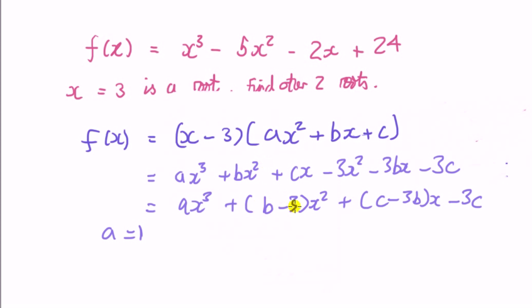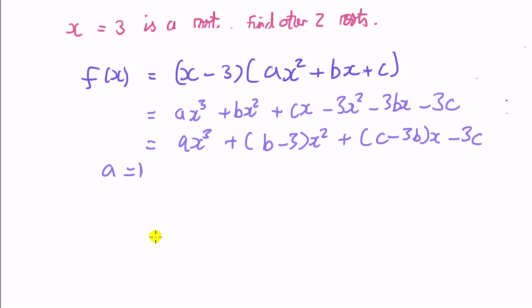X squared term, this here, b minus 3, must equal minus 5. X term, c minus 3b, must equal to minus 2. And finally, this thing must equal to minus 24. So as I said, we have a system of equations to solve.